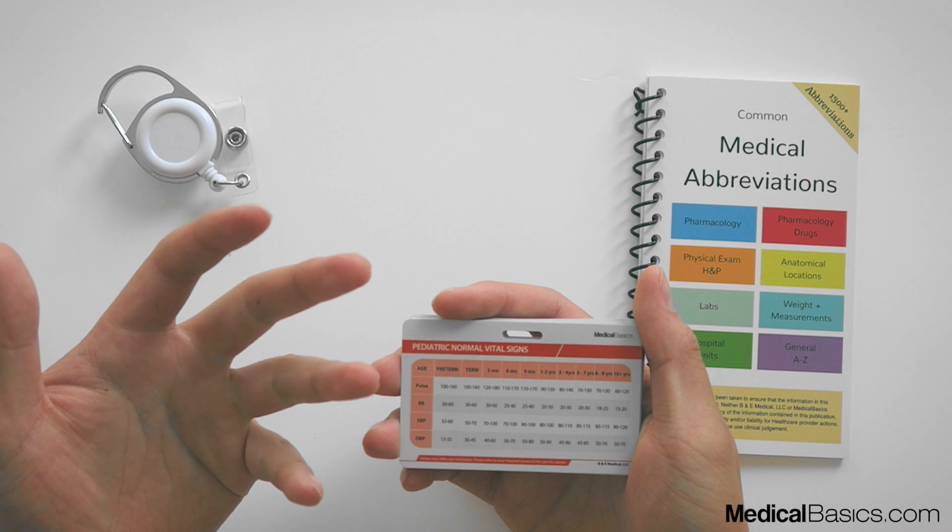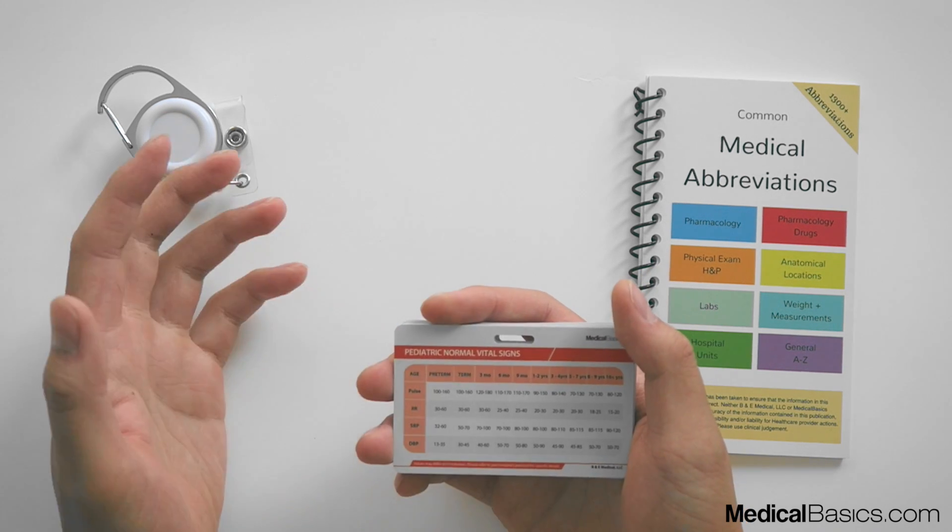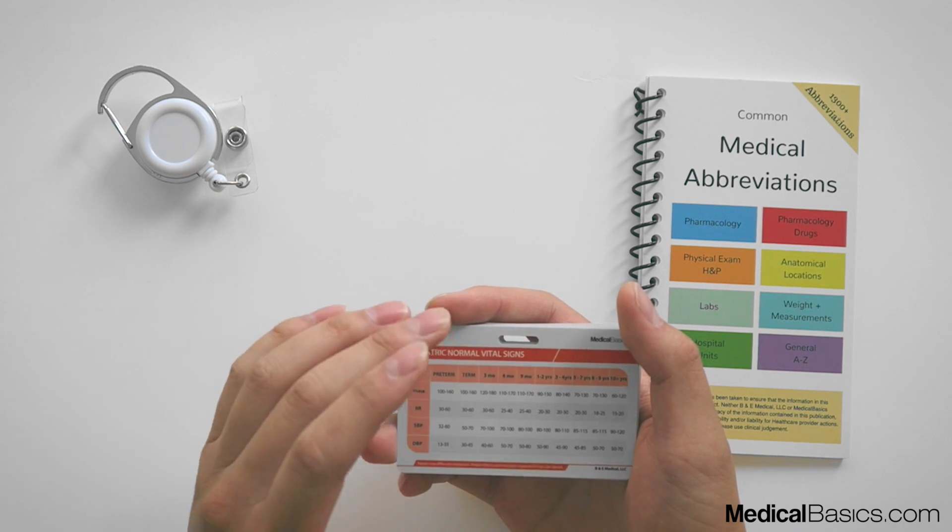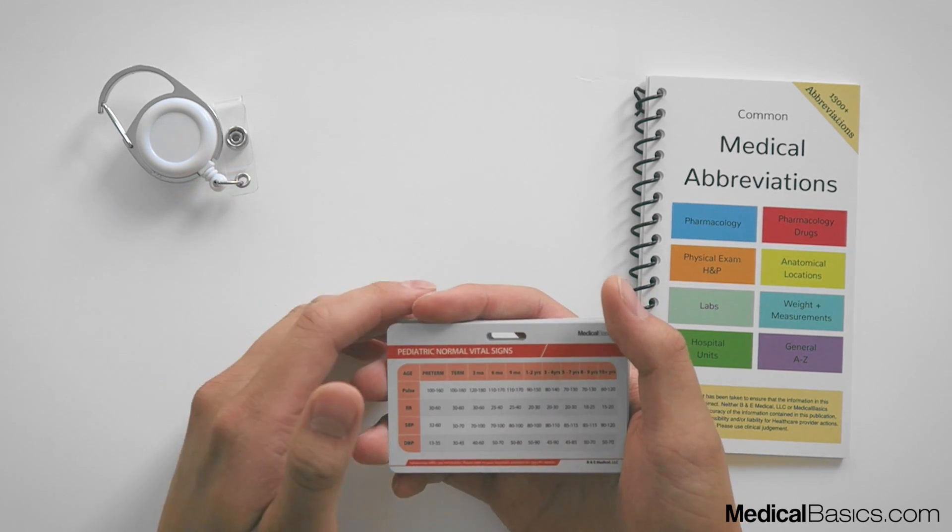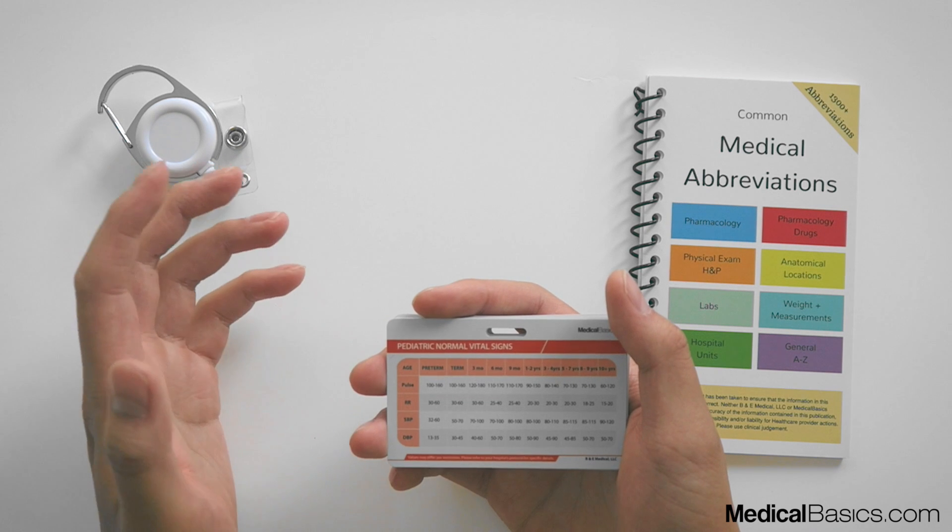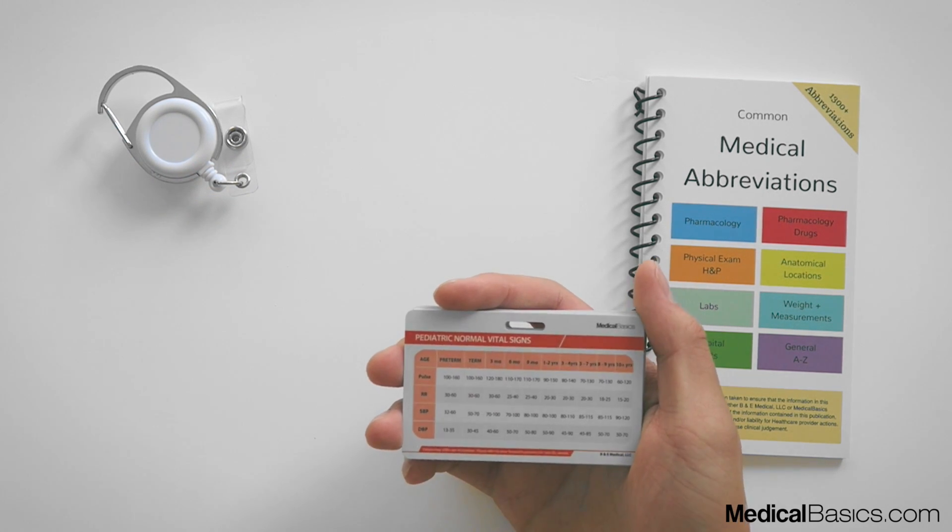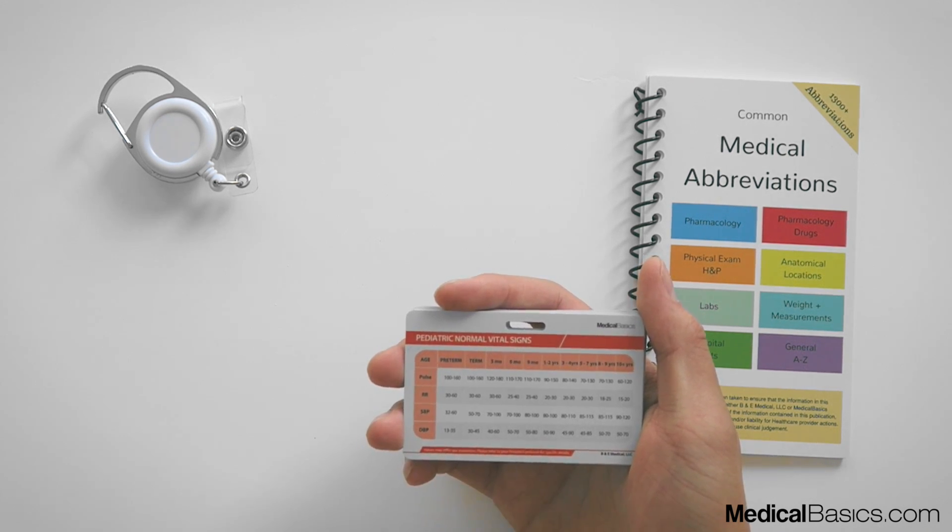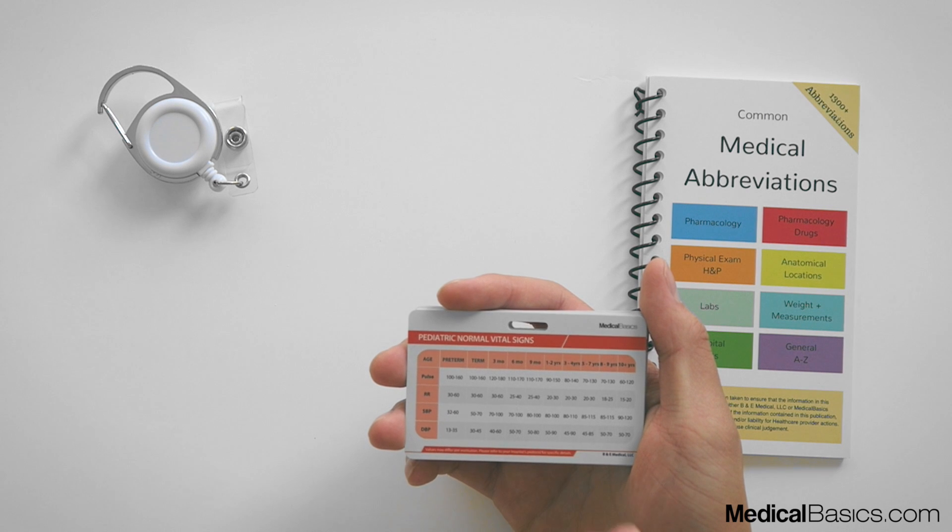Whether it was pediatric vital signs, immunizations, vaccines, or even lab values, I couldn't memorize any of those things and especially not the milestones. These were things that they would always ask, and I found that even residents, pediatric residents, had a lot of difficulty. More so, the earlier residents had difficulty even just remembering some of these things as well.